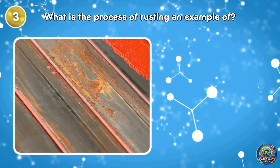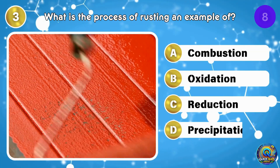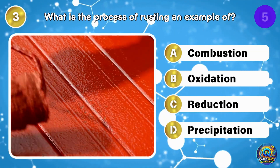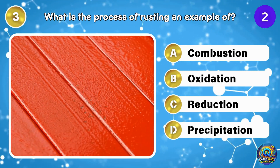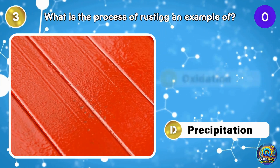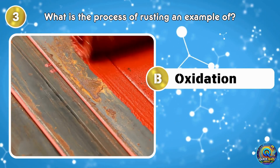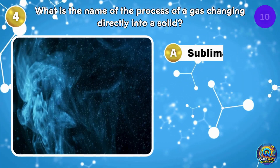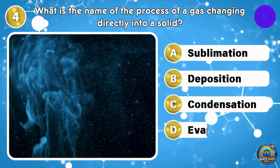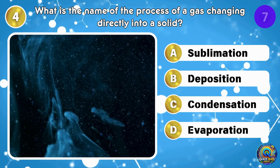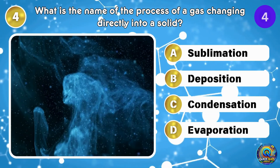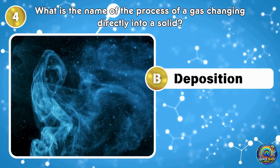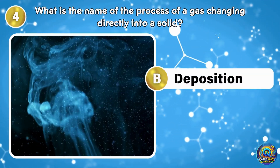What is the process of rusting an example of? The answer is oxidation — that's what's happening to your bike chain right now. What is the name of the process of a gas changing directly into a solid? The answer is deposition — skipping the liquid phase just like it's in a hurry.